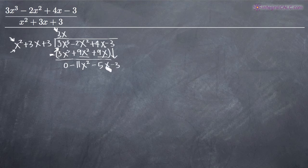Now we perform the same concept again. What do we multiply x² by to get -11x²? That would be -11. We multiply -11 through each term of x² + 3x + 3, giving us -11x² - 33x - 33.